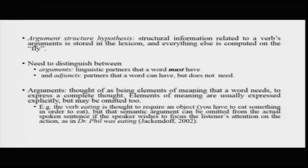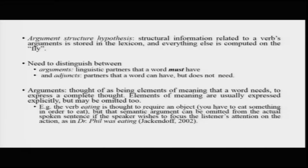To apply this, you need to distinguish between arguments and adjuncts. Arguments are the linguistic partners that a word must have — without which the verb cannot be fully expressed. Adjuncts are partners that a word can have but does not necessarily need. For example, 'I was sleeping' is fine by itself; it can have 'I was sleeping at the bed,' but that does not really matter. Arguments can be thought of as elements of meaning that a word needs in order to express a complete thought.